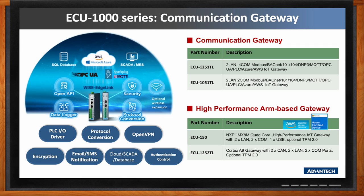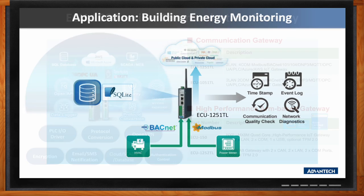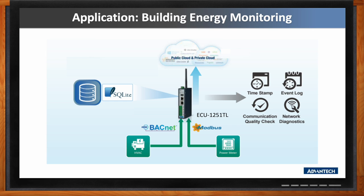The ECU-1252 also comes with two CAN ports. Now let's talk about applications. What kind of applications are these gateways a good fit for? One application is building energy monitoring. To manage equipment like HVAC and power meters and collect data, the ECU-1251 is used to communicate with the HVAC and meters via different protocols like BACnet and Modbus. After collecting data from the equipment and meters, the gateway sends the information to the cloud and database. The data also comes with timestamps for further data analysis, and a watchdog checks the system regularly to assure data reliability.